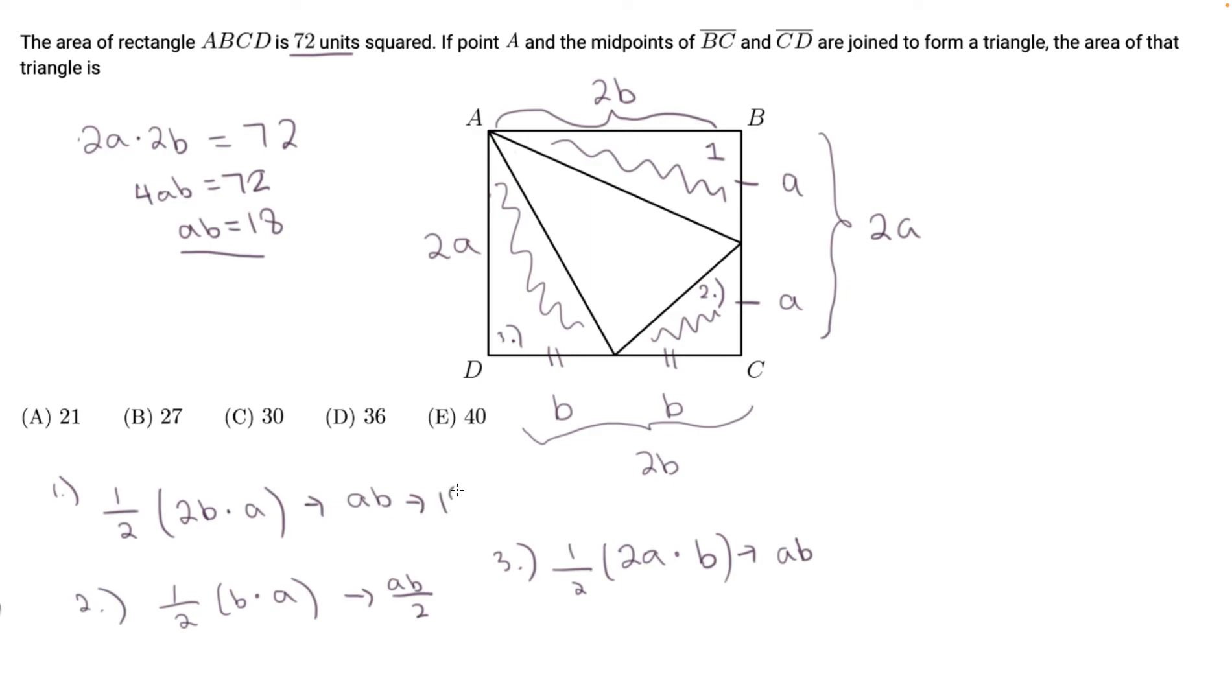So this is 18, 18 over 2, that's 9. And this is 18. So we have 18 plus 18 plus 9 equals 45.